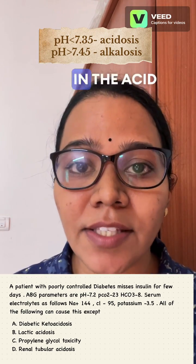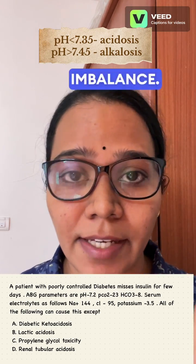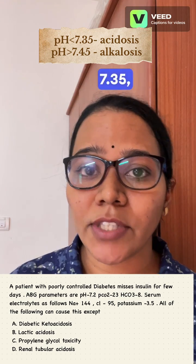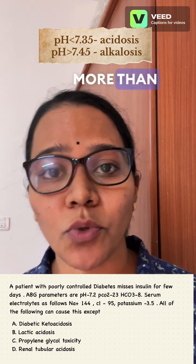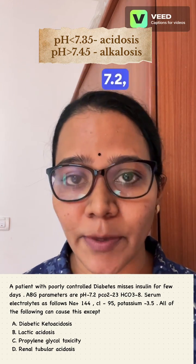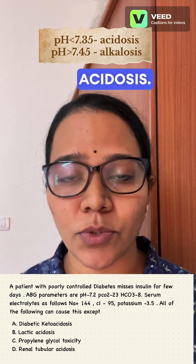First, you check the pH in the acid-base imbalance. If pH is less than 7.35 it's acidosis; more than 7.45 it's alkalosis. So here it's 7.2 — it is acidosis.